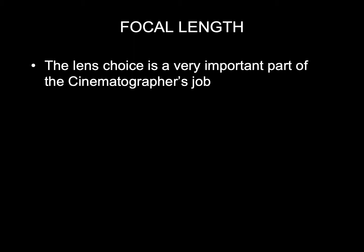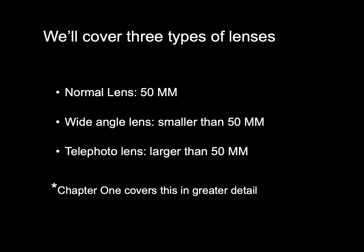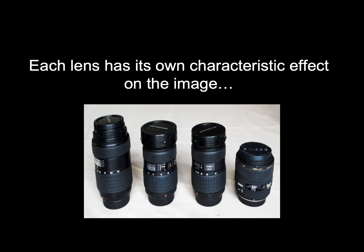Focal length. The lens choice is a very important part of a cinematographer's job. We'll cover three types of lenses: a normal or 50mm lens, a wide-angle lens which is smaller than 50mm, and a telephoto lens that's larger than 50mm. Be sure to read about this in Chapter 1, as it covers this topic in greater detail. Each lens has its own characteristic effect on the image.